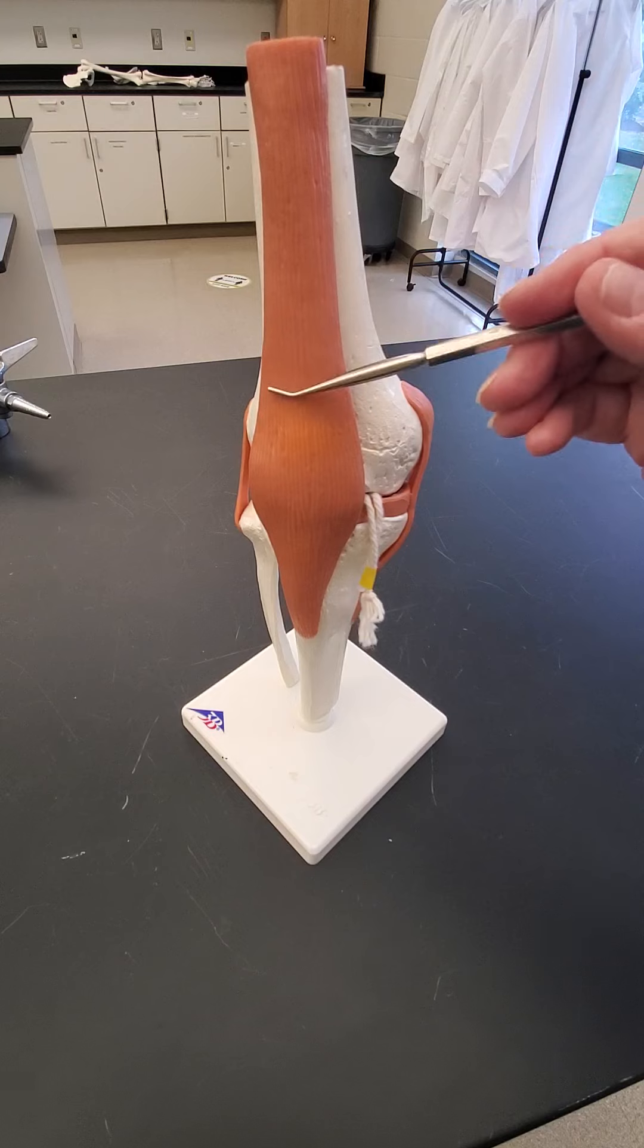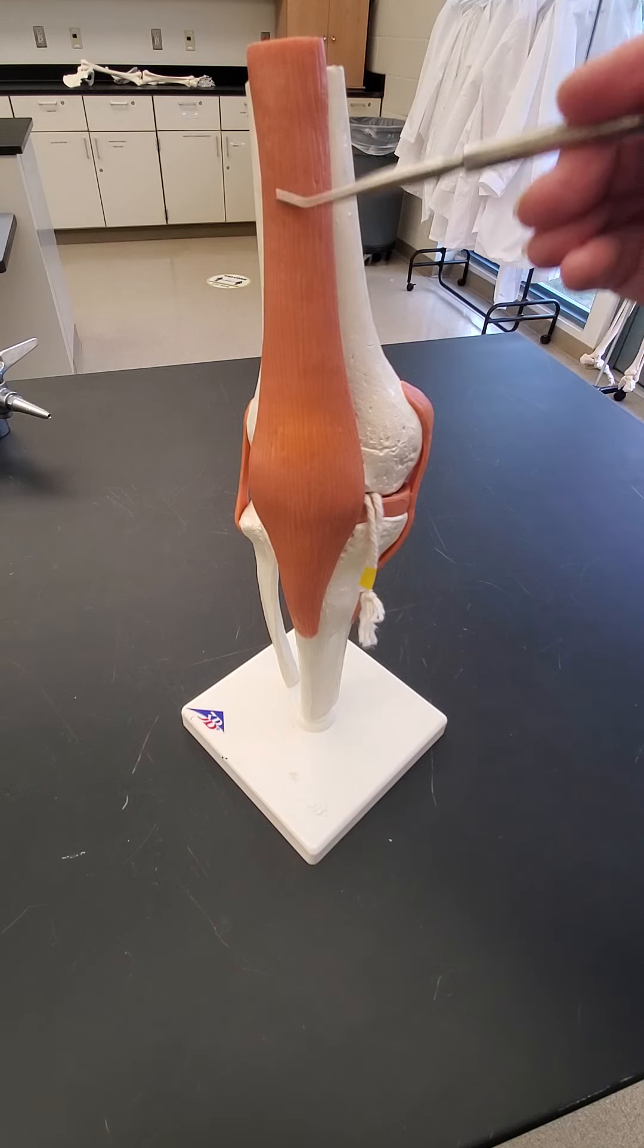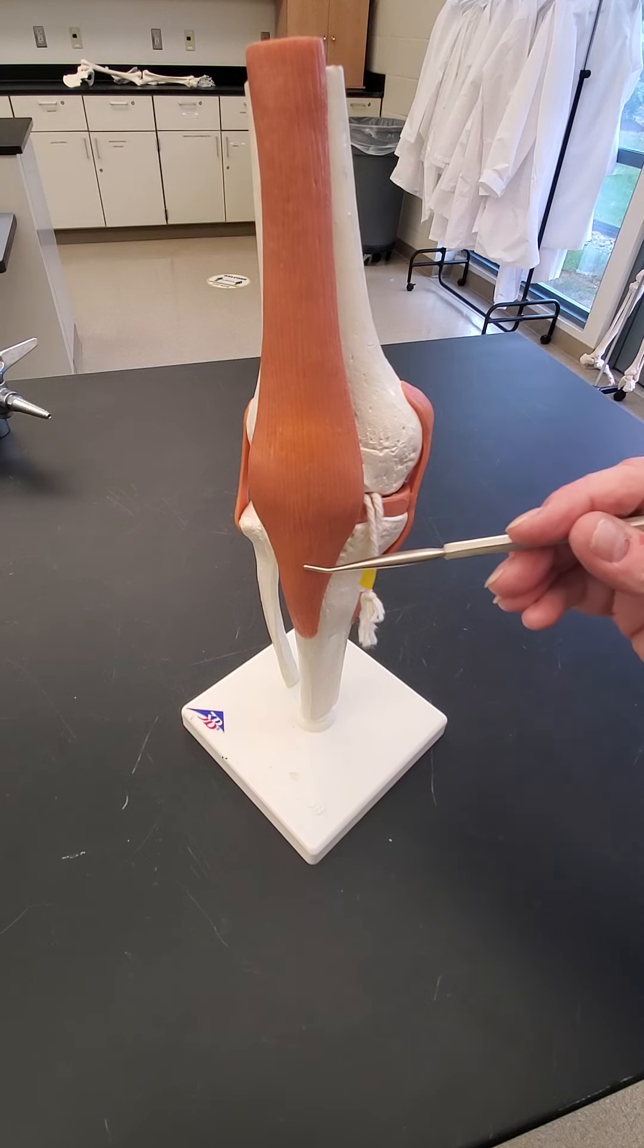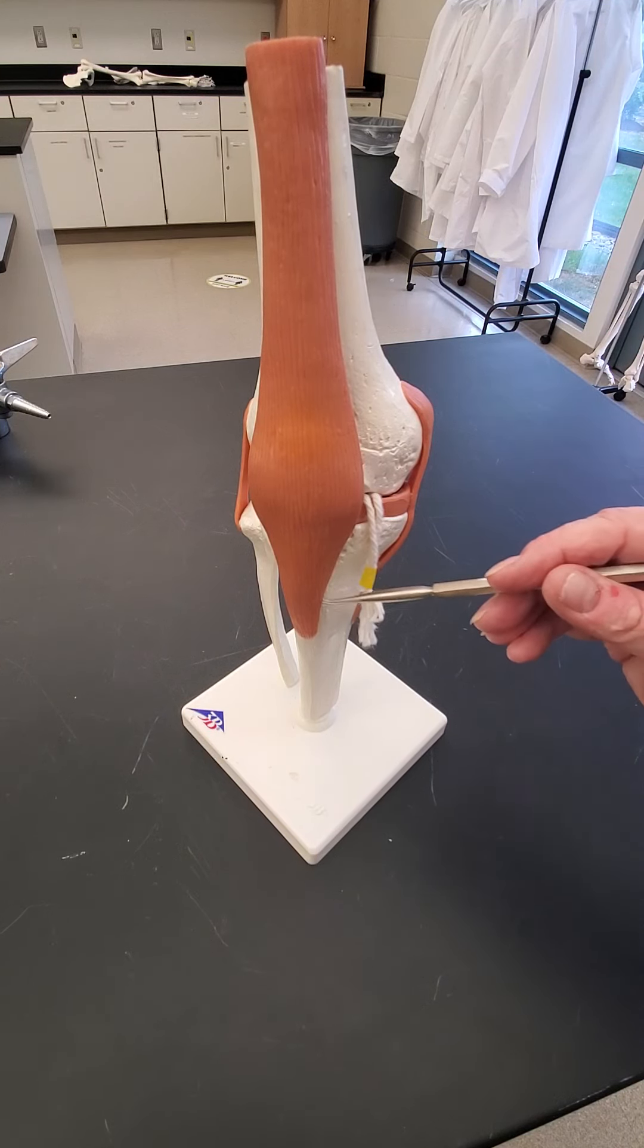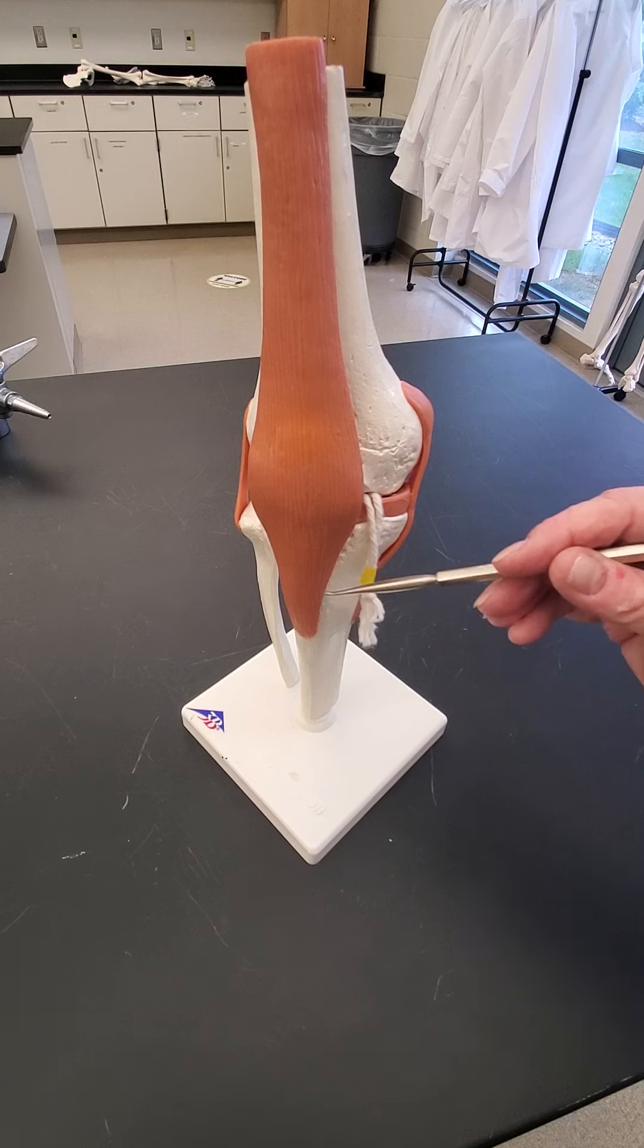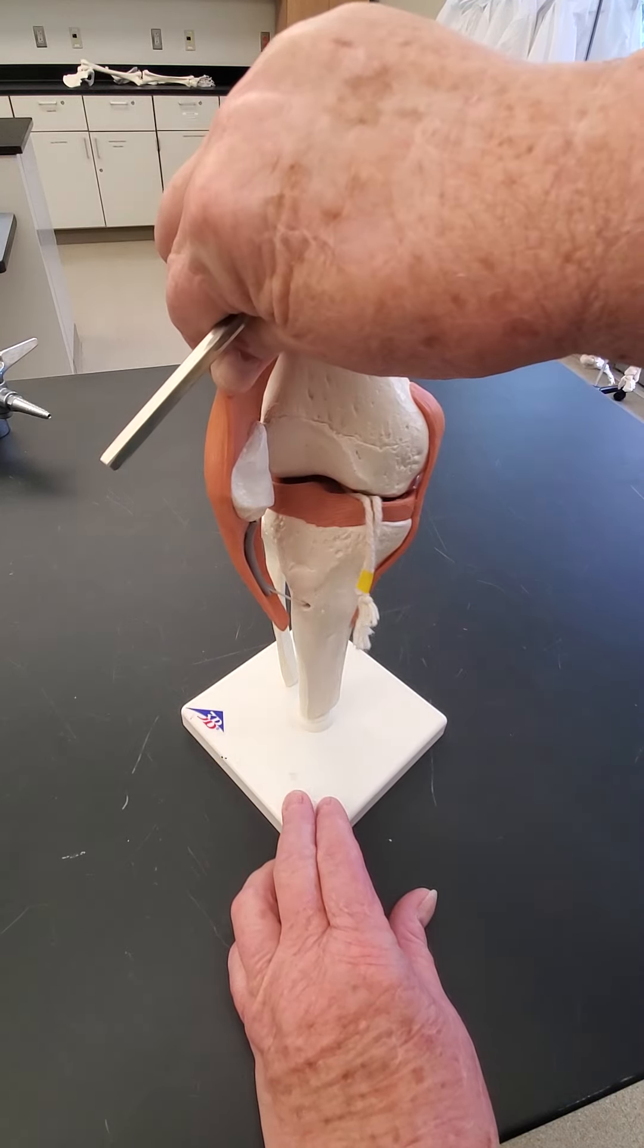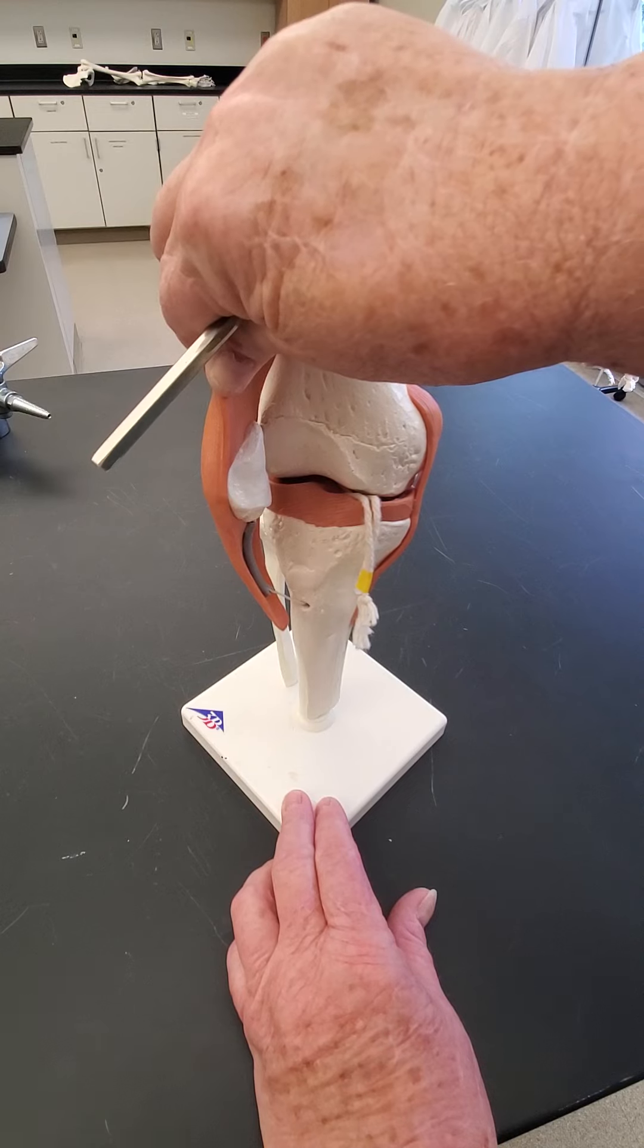So here's that patellar tendon I talked about. This comes from your quads, the muscles in the front of your thigh. It crosses over your knee joint and attaches to the tibial tuberosity right back here. And you can see there's that patella embedded in it.